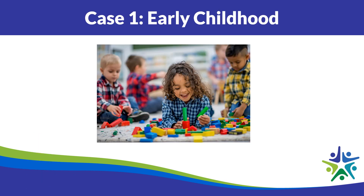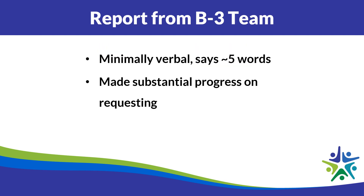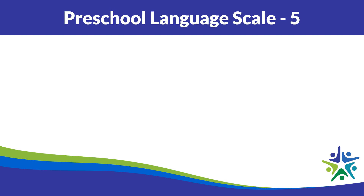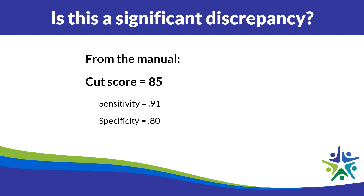Let's begin with our first case: early childhood. You've received a report from the birth-to-three team stating that this child is minimally verbal — says about five words, so not really talking very much — and that they've really been working on nonverbal requests, and he's made quite a lot of progress. You decide to give the PLS-5 and observe a total language score of 65. The next question is: is that a significant discrepancy from his peers? We can look to the manual.